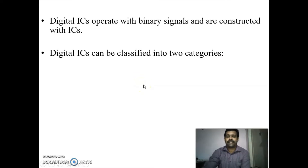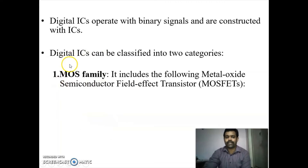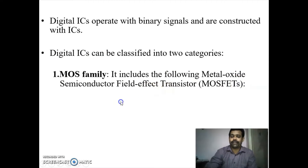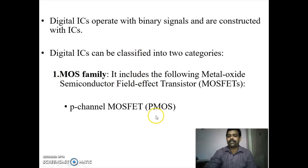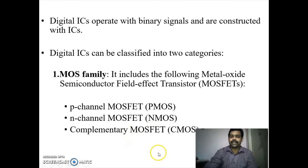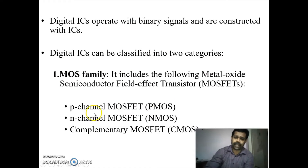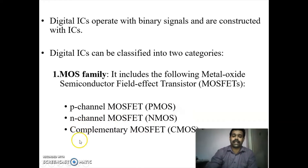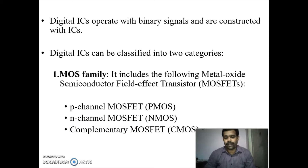Digital ICs can be classified into two categories. The first one is the MOS family, which includes metal oxide semiconductor field effect transistors. In MOS there are PMOS, NMOS, and CMOS. Digital ICs made using the MOS family are classified by P-channel MOSFET, N-channel MOSFET, and CMOS — complementary MOSFET, which has both PMOS and NMOS.